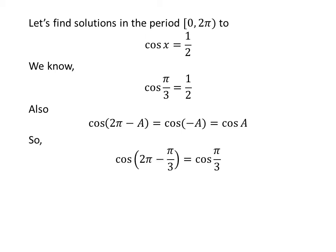Application of the above identity implies that cosine of 2 times pi minus pi upon 3 is equal to cosine of pi upon 3. As 2 times pi minus pi upon 3 is equal to 5 times pi upon 3, so cosine of 5 times pi upon 3 is equal to half.